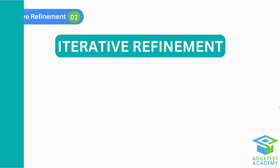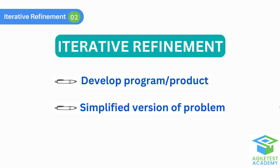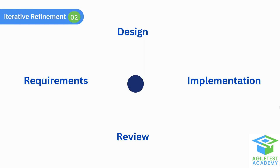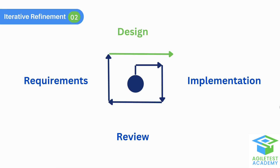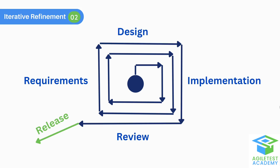Iterative Refinement is a process of developing a program or a product by starting with a simplified version of a problem and adding details and functionalities bit by bit. In a project, we can start by creating a prototype system early in the development process via design and implementation, then review the prototype with clients and test with users based on requirements, and refine the prototype in a series of iterations until the final product is released. Techniques used include user interface mockup, throwaway software components, dummy modules, rapid prototyping, and successive refinement.